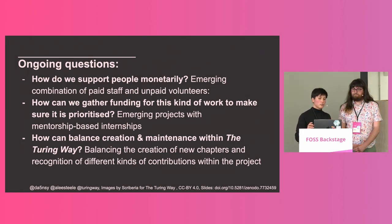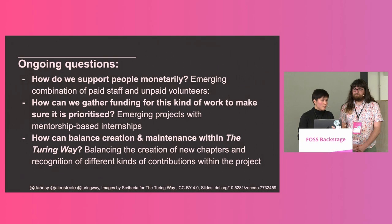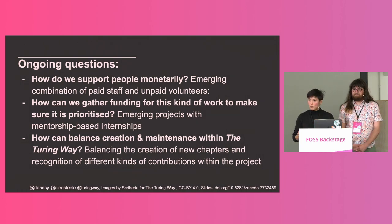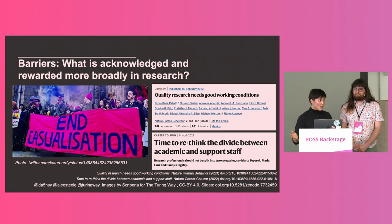These questions play into a broader one within open source more broadly: balancing the creation of chapters and documentation within the Turing Way with the broader need for maintenance of it, because creation ultimately feeds into maintenance. How can we balance this creation of chapters — the primary way the Turing Way has developed — with recognition of different types of contributions, including translation, infrastructure maintenance, and all different types of work?